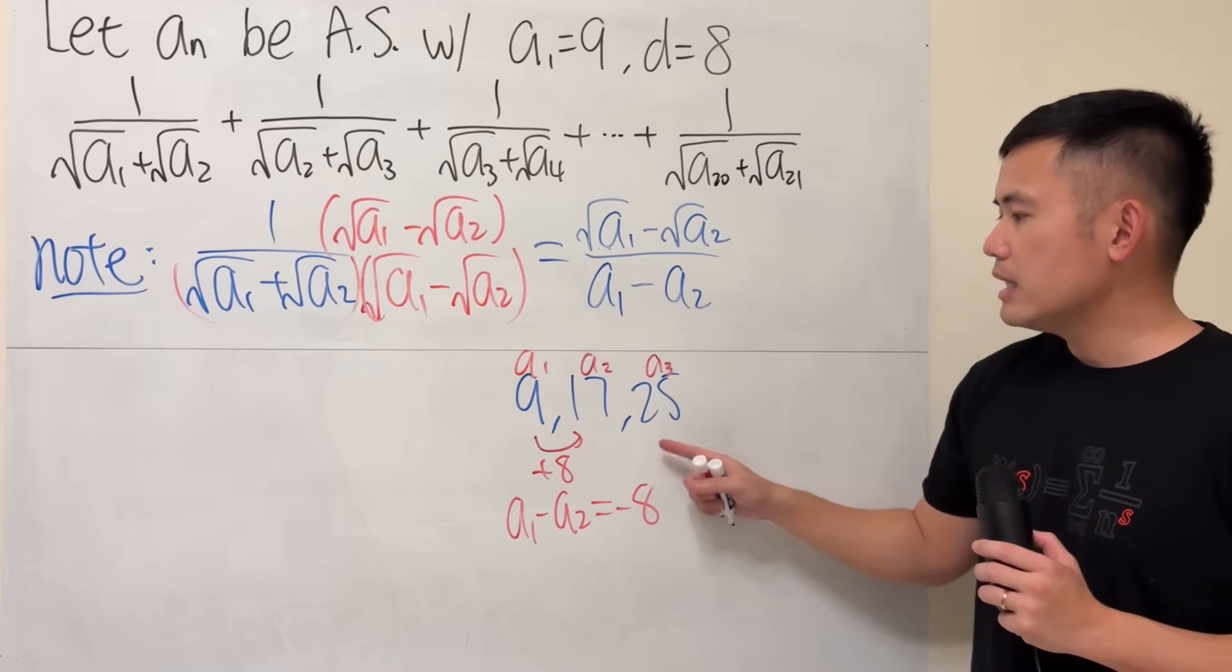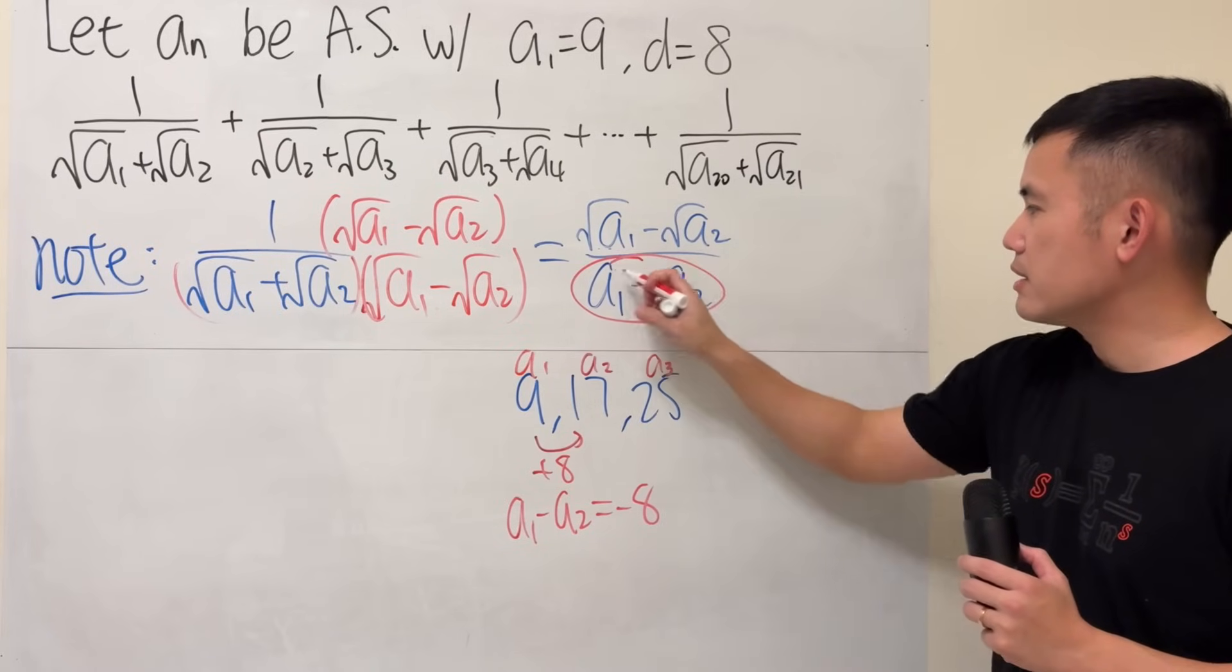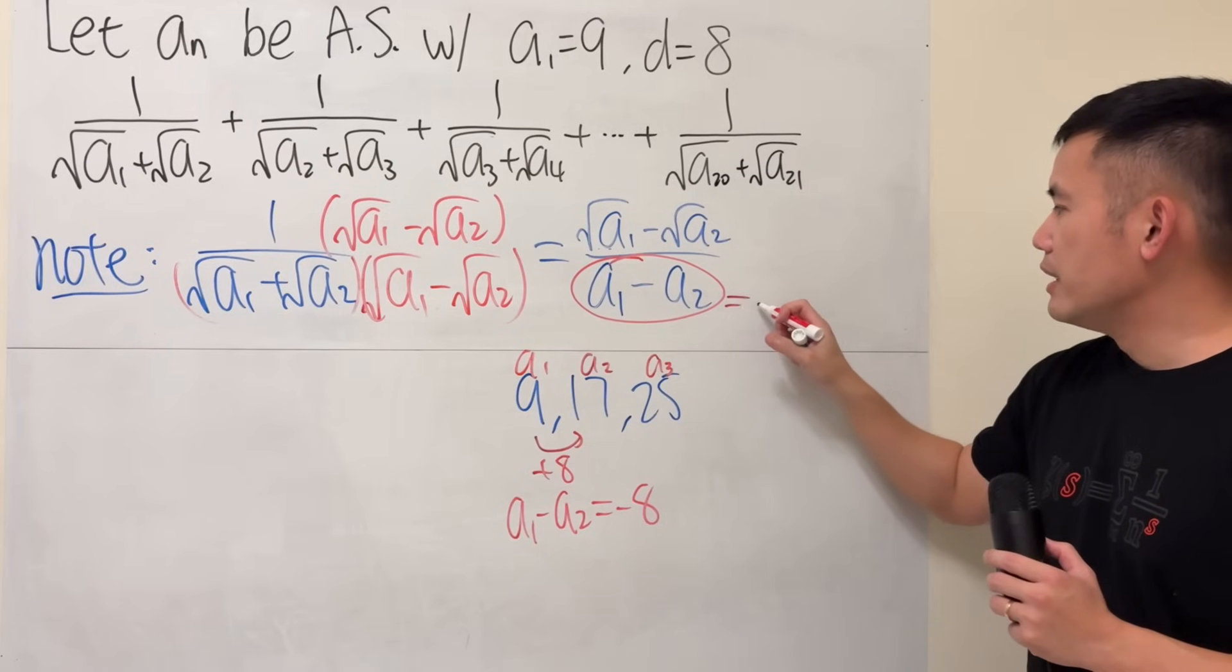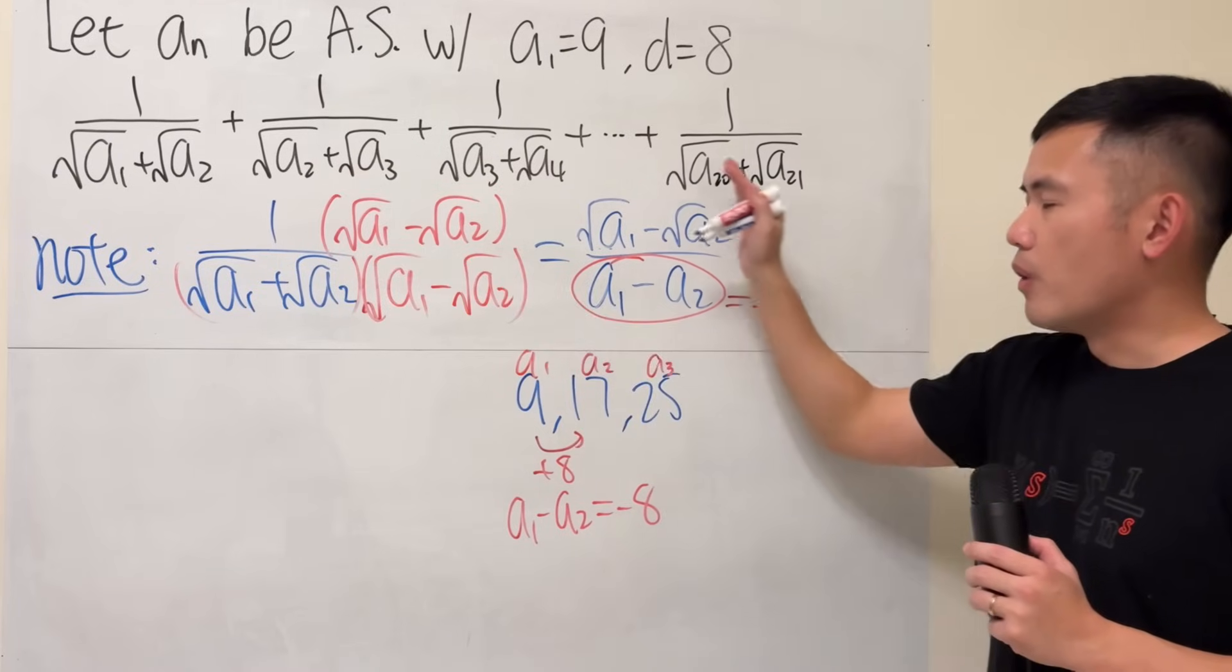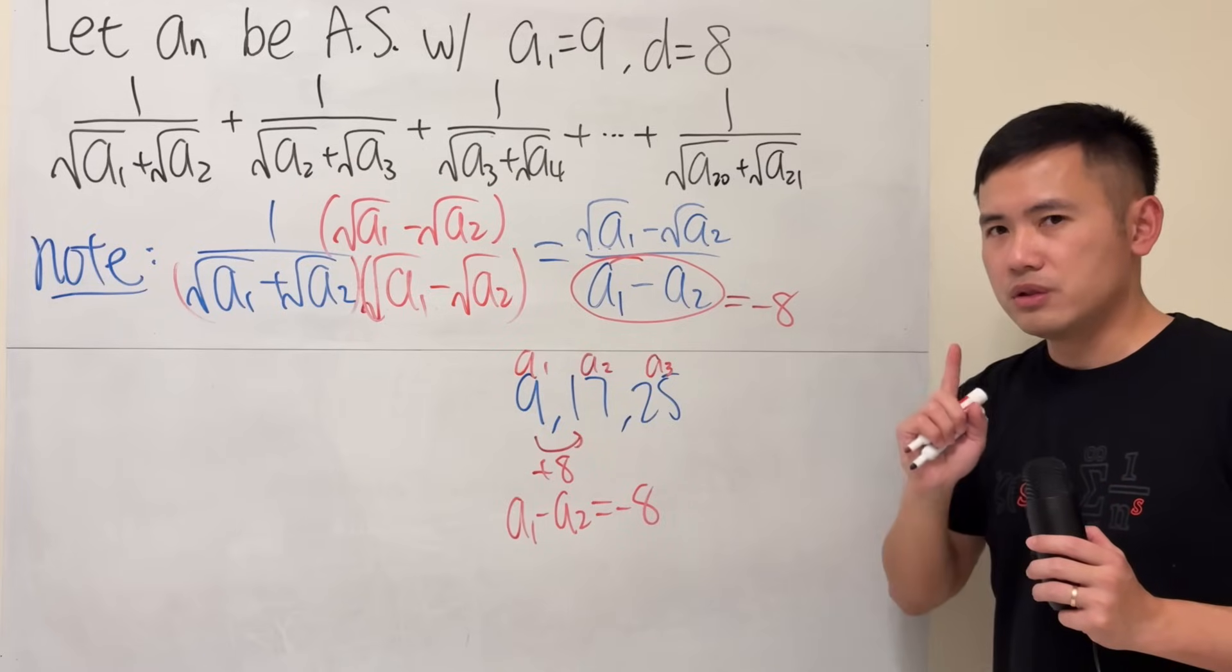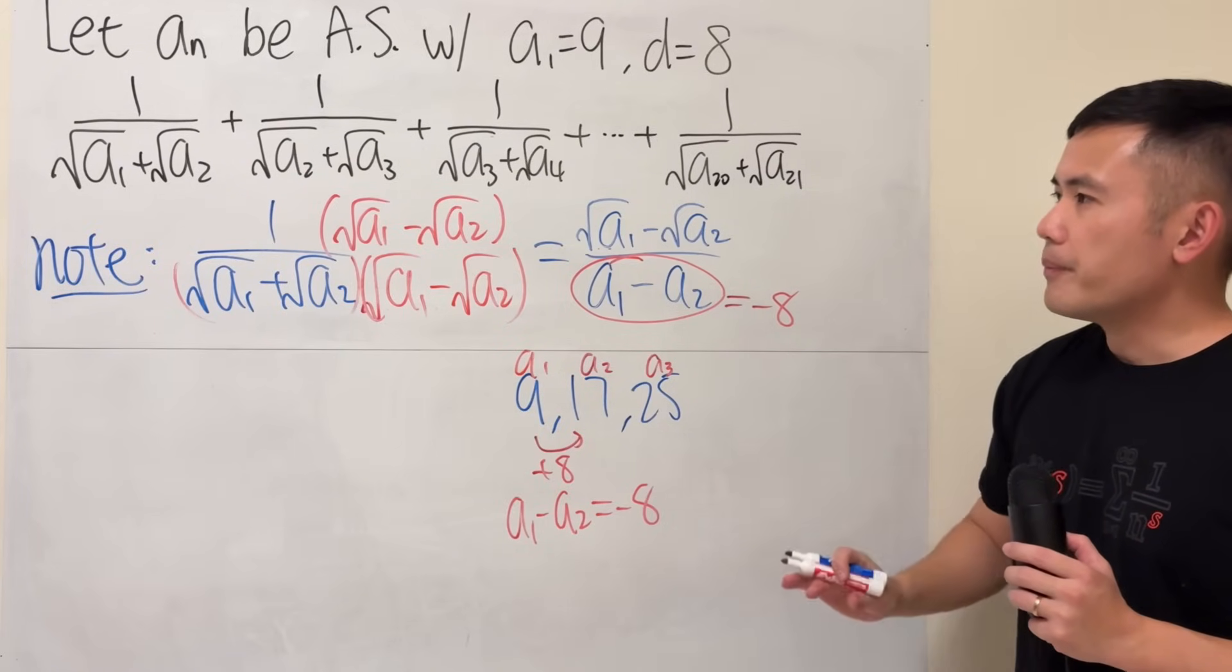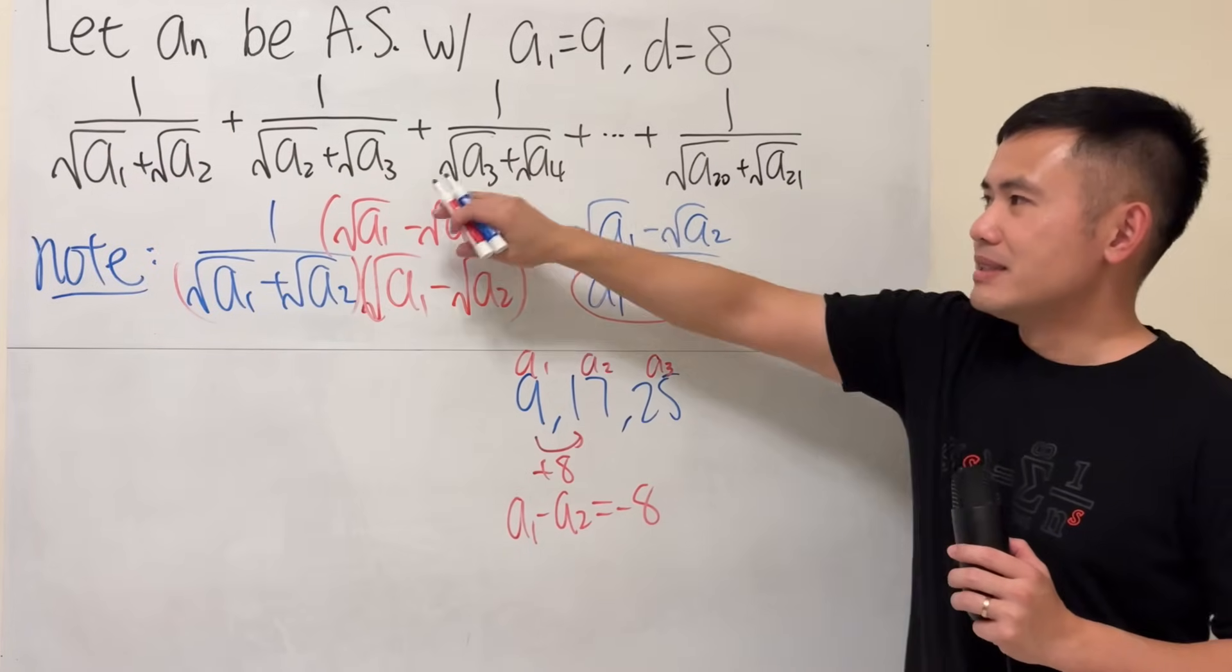Likewise, if you do this minus that, you just get negative 8. So, in fact, this denominator is going to be negative 8. And if we do the same thing for all this right here, all the denominators will be negative 8, which is very good. So now, let's just multiply everybody by its conjugate and then see what happens.